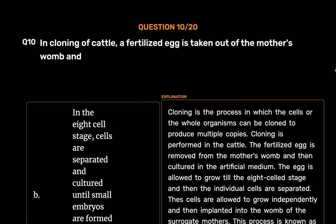Cloning is the process in which the cells or the whole organisms can be cloned to produce multiple copies. The fertilized egg is removed from the mother's womb and then cultured in the artificial medium. The egg is allowed to grow till the eight-cell stage and then the individual cells are separated. These cells are allowed to grow independently and then implanted into the womb of the surrogate mothers. This process is known as the artificial twinning method.